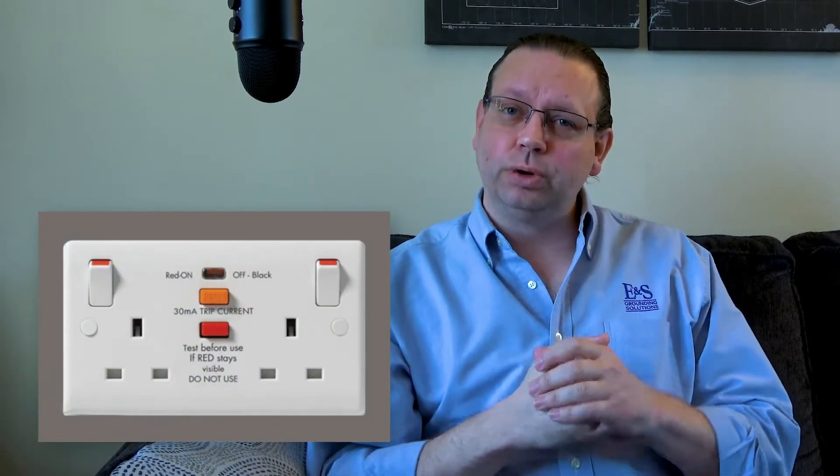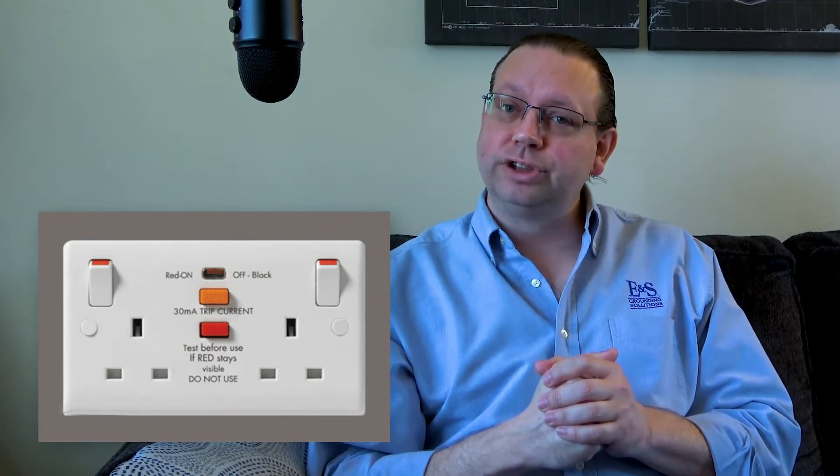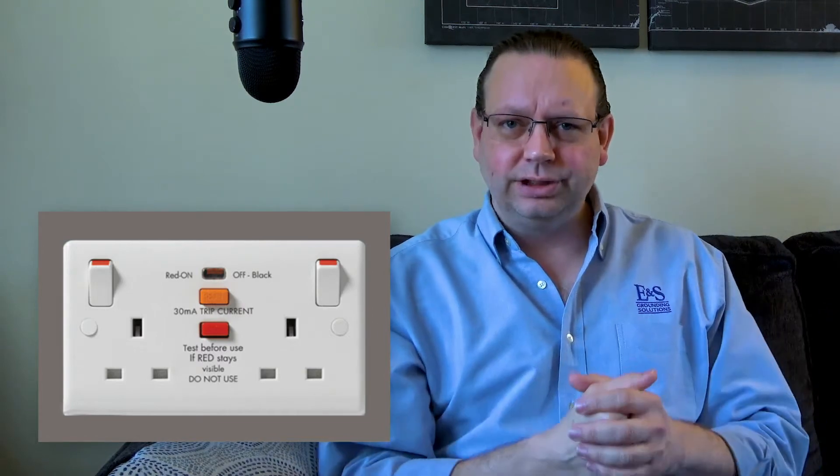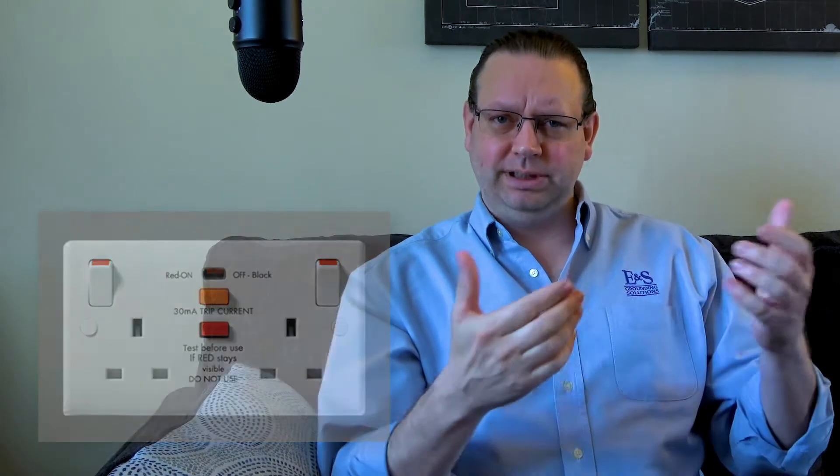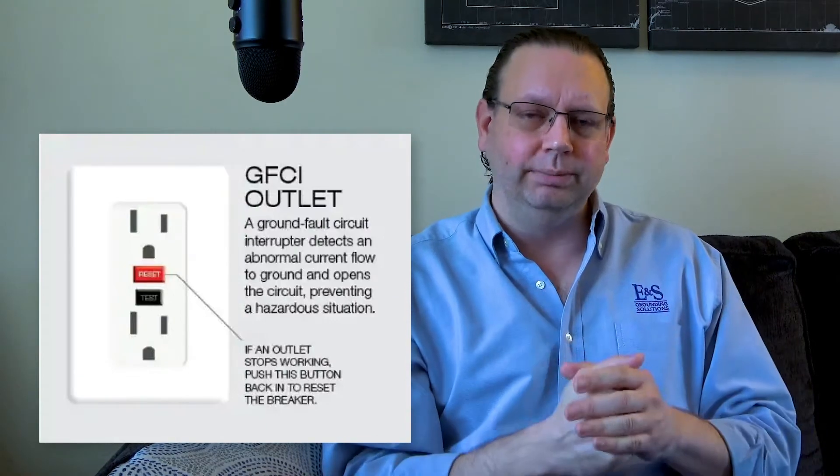So how do GFCIs and circuit breakers work? For those of you in Europe, you may know them as RCDs or residual current devices. Here in the United States, we call them ground fault circuit interrupters or GFCIs. They're the same thing, just two different names. So if you see me saying GFCI, just know that means RCD as well. Same exact item, different names.